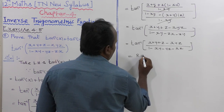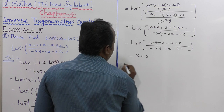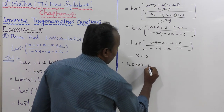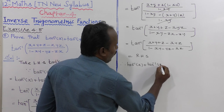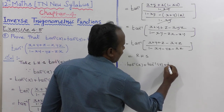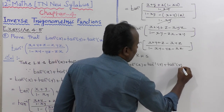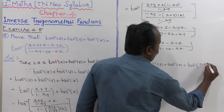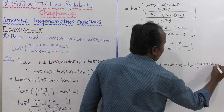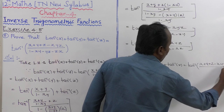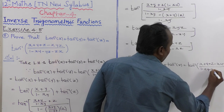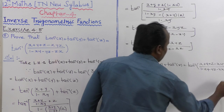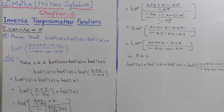That is equal to RHS. Therefore, tan inverse of x plus tan inverse of y plus tan inverse of z equals tan inverse of x plus y plus z minus xyz, the whole divided by 1 minus xy minus yz minus zx. Hence the proof.